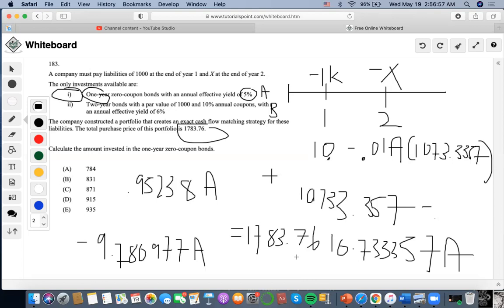And I'm gonna get 915 as A. If 915 is known to be the cash flow of A, we're gonna have to discount it by its effective yield to find out how much it was invested at time zero. So we're gonna divide this by 1.05 and we're gonna end up getting 871.42, which makes the answer here.